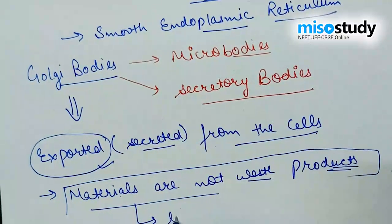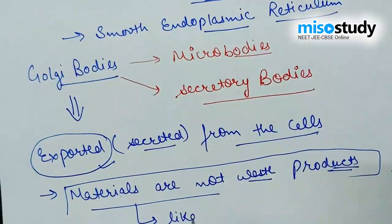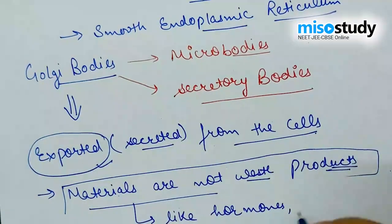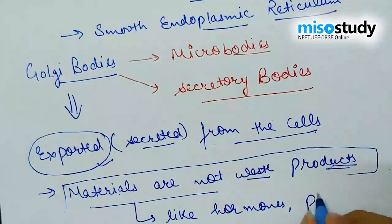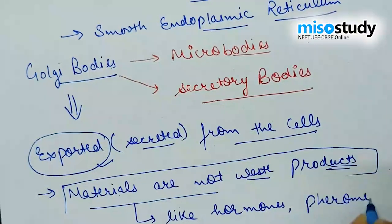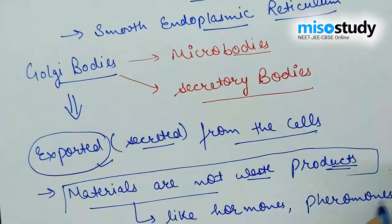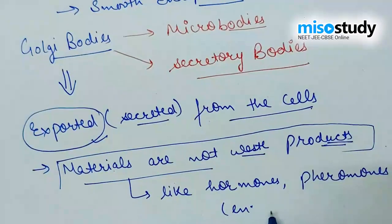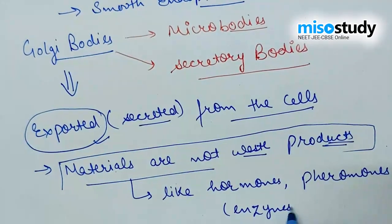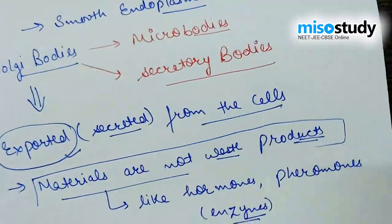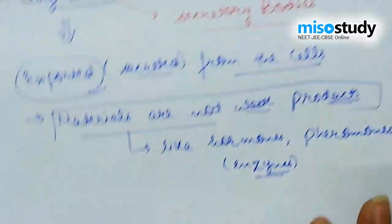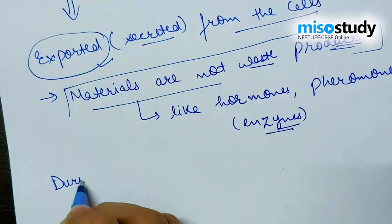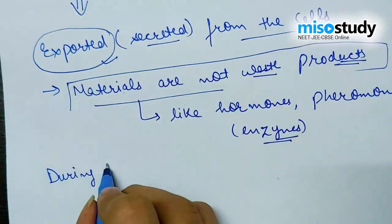These Golgi vesicles contain the material that is exported — meaning secreted — from the cells. The materials that are exported and excreted by the Golgi bodies are not waste products; they are chemically and intentionally manufactured by the cell only for export purposes. These materials include hormones, pheromones, and enzymes. During the process of cytokinesis, small vesicles named phragmoplast are provided by the Golgi complex to help in cell plate formation.